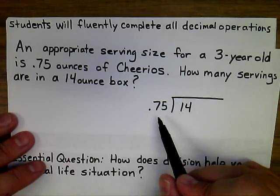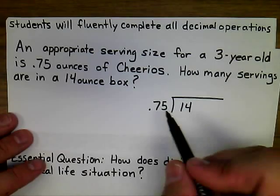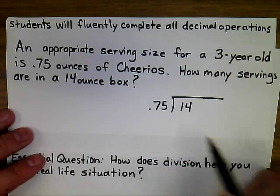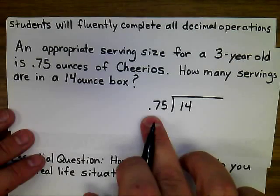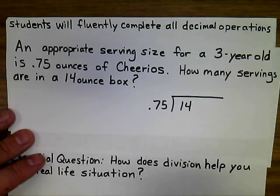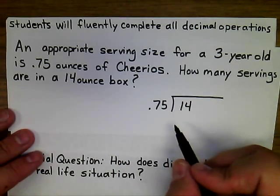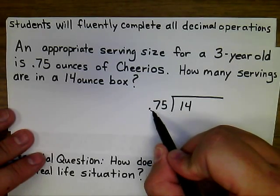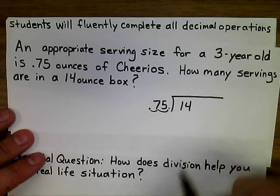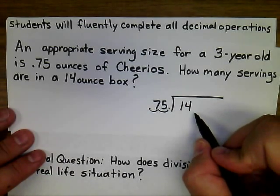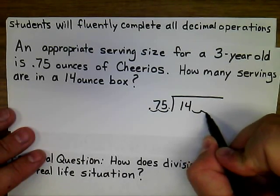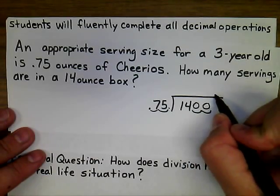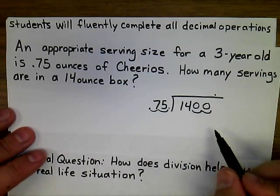A common mistake is to mix up the dividend and divisor because 75 looks larger than 14. But we must recognize that 14 is our full amount and 0.75 is what we're dividing into portions. Knowing the rules for decimal division, we can't have a decimal divisor, so we move the decimal two places to make the divisor a whole number. We do the same to the dividend, holding zeros for those places and bringing the decimal point straight up into the quotient.